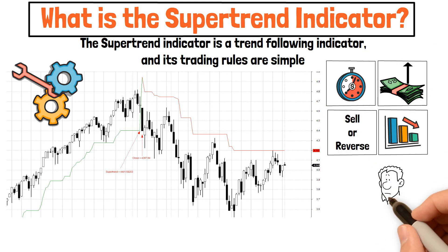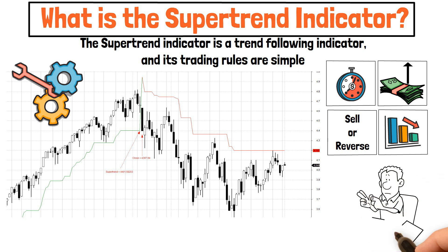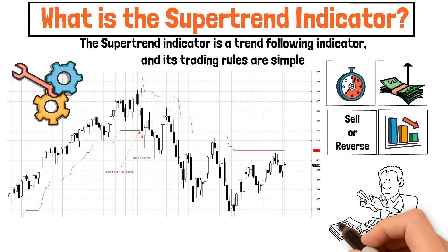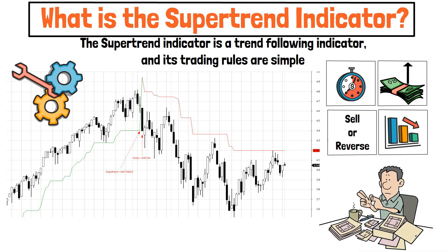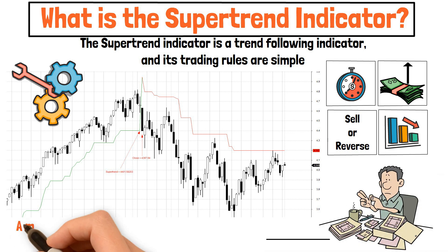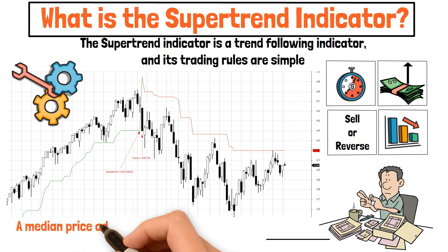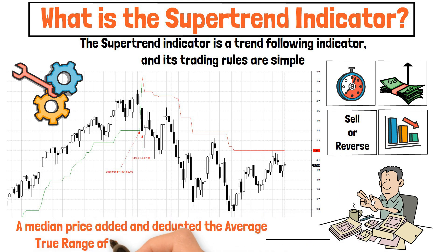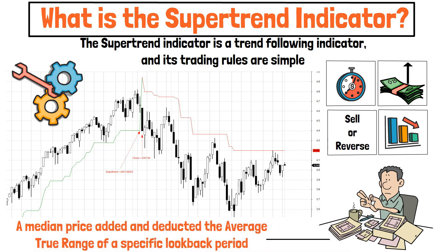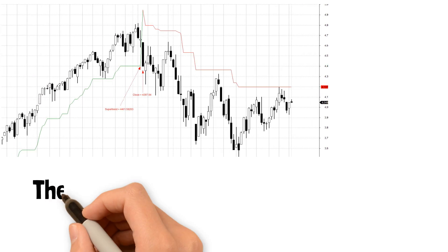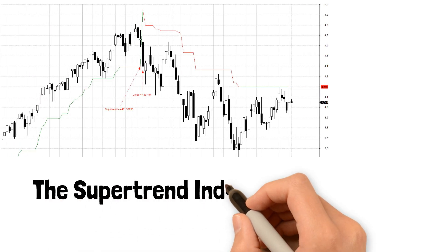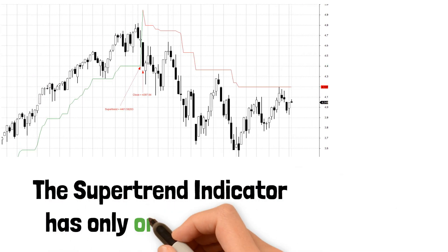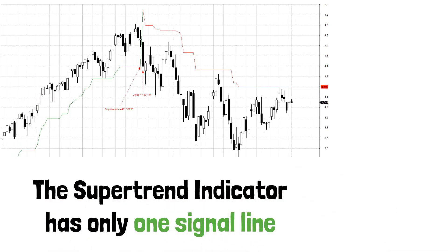Before we present the trading rules in our backtest, let's briefly explain how the Supertrend Indicator is calculated. The indicator consists of a median price added and deducted by the average true range of a specific look-back period. Despite using two bands, the Supertrend Indicator has only one signal line.